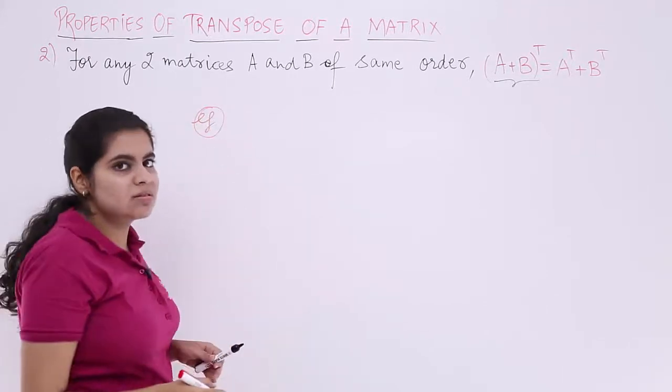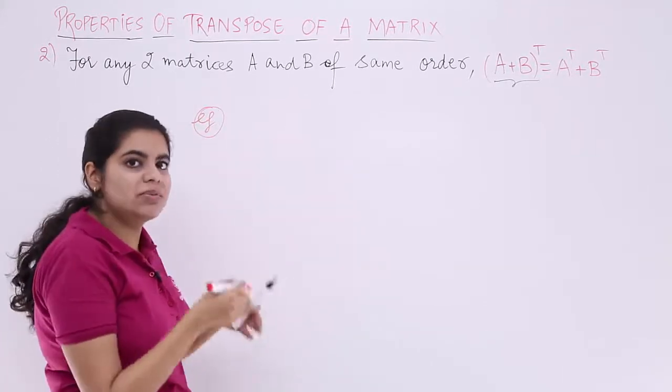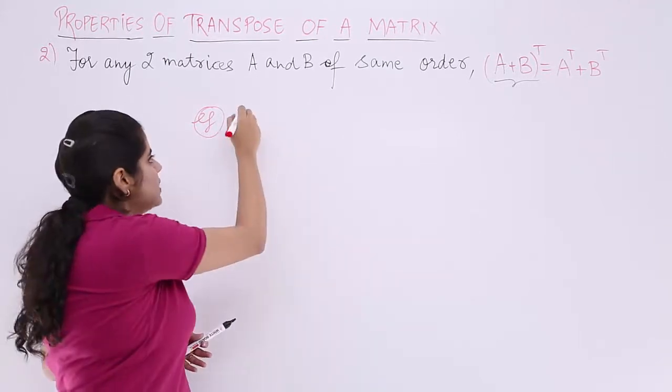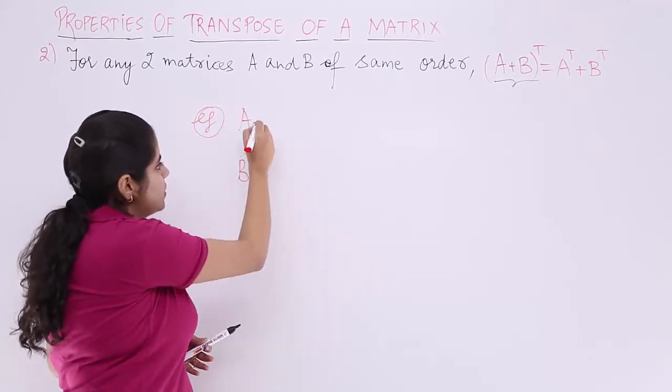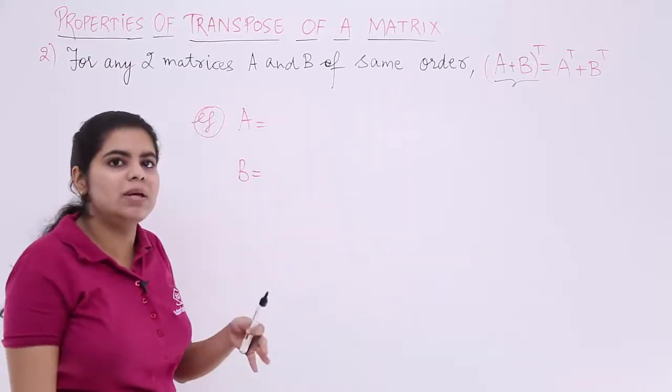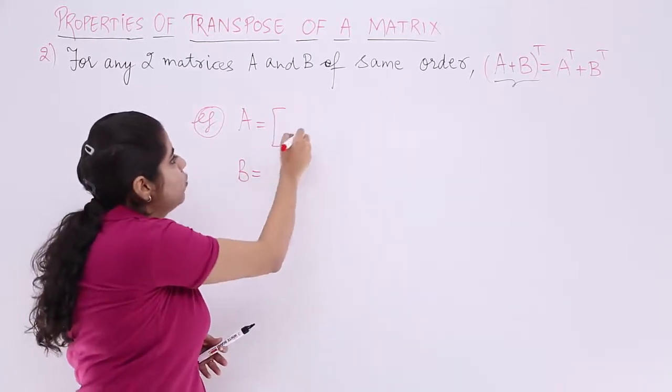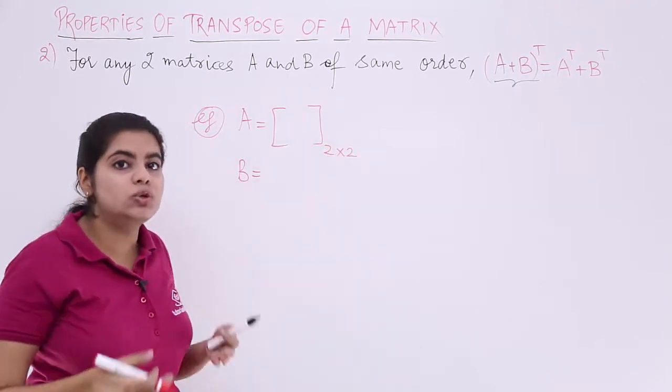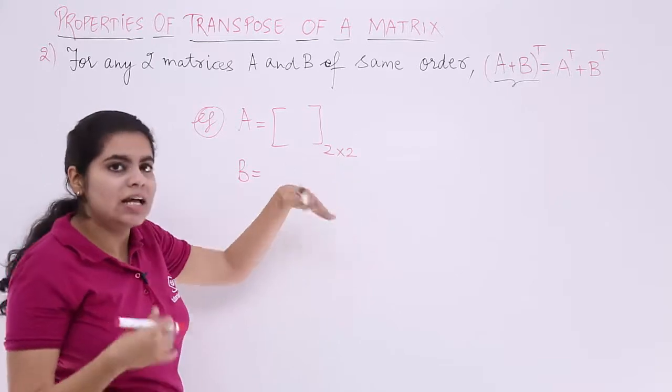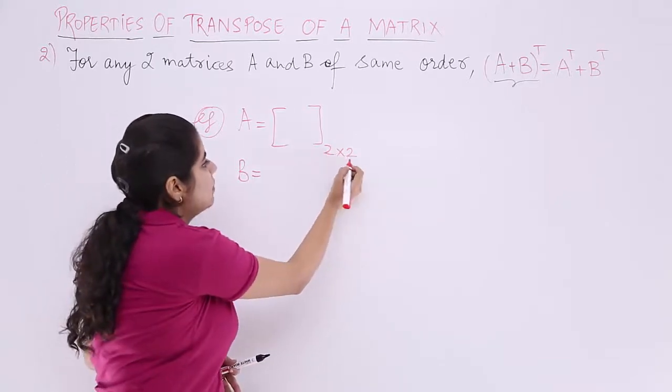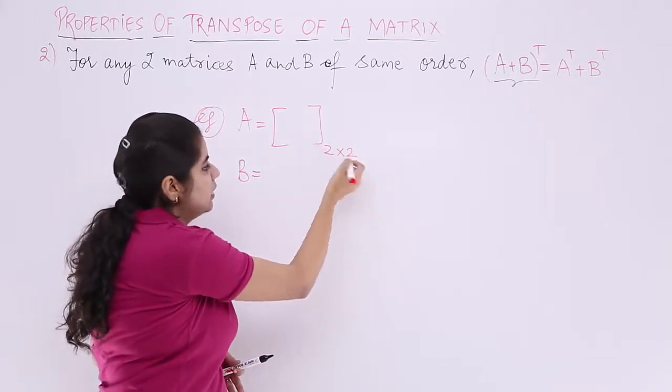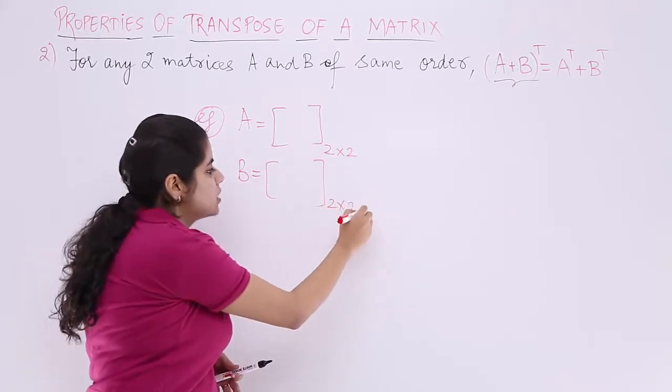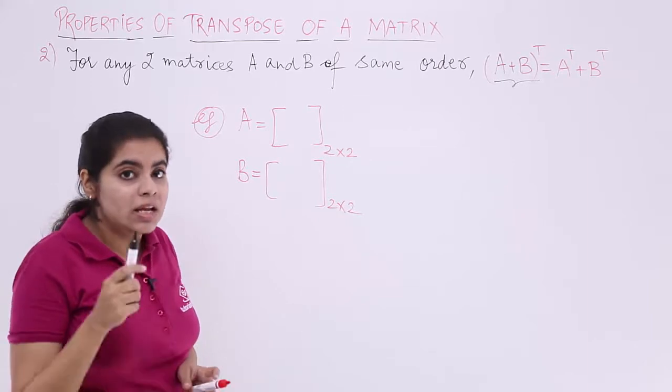We are taking two matrices A and B as the name suggests. We can take any two P and Q, R and S, any two matrices. Let's take A and B as two matrices and they have to be of the same order. So I am taking them of a 2×2 order. You can even go with 3×2 or 2×3 or any order. We are taking it 2×2 for our convenience. Even B matrix, because of the same order, has to be 2×2.